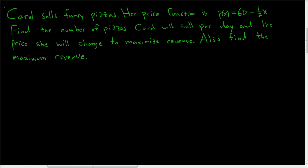Carol sells fancy pizzas. Her price function is given by this formula here, p(x). We want to find the number of pizzas Carol will sell per day and the price she will charge in order to maximize revenue. We also want to find the maximum revenue.